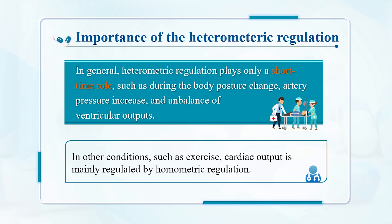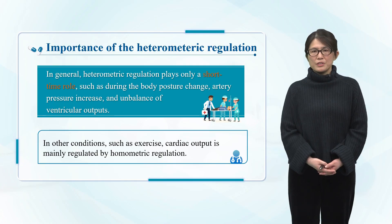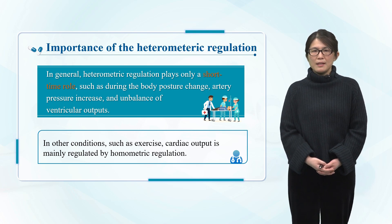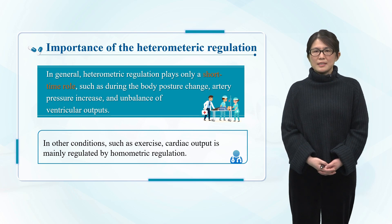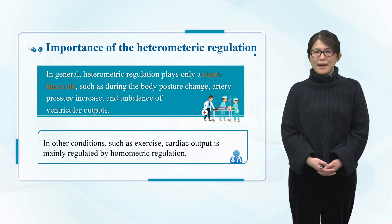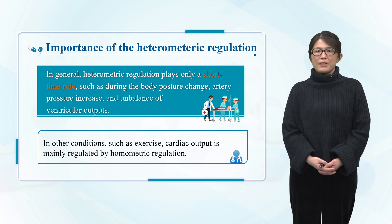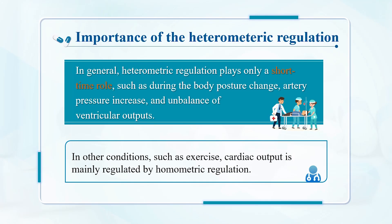The preload of the ventricle mainly depends on the amount of blood filled at the end of diastole, which is the sum of the blood returned from the veins and the blood remaining in the ventricle after ejection. In most cases, the amount of venous return blood is the main factor determining the size of ventricular preload. The venous return blood volume is affected by factors such as ventricular filling time, venous return speed, ventricular diastolic function, ventricular compliance, and intrapericardial pressure.